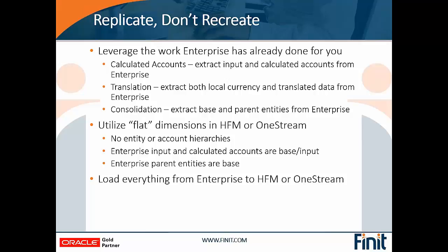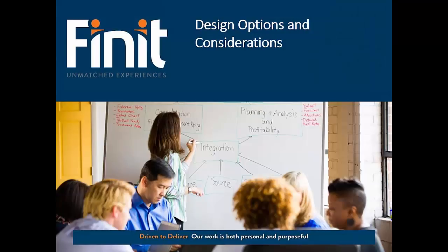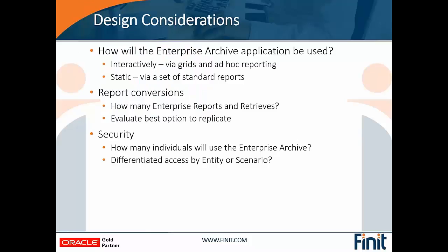We do that by utilizing a flat dimensional structure in HFM or OneStream for the account and entity dimensions. You can visualize this by thinking about the intercompany dimension in HFM — it's just a flat listing of entities, there's not a hierarchy to it, and that's similar to how the basic Enterprise archive application is structured. We capture all the input and calculated data and load it to base and parent entities, but all of that data is at a base level in terms of dimensionality. So if this is something you want to explore, we want to have some conversations with you to understand your situation and think through a good design based on your needs.